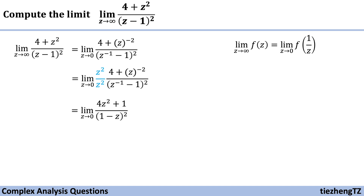The function becomes (4z² + 1) / (1 - z)² when z approaches 0. Now we can substitute z = 0, and the function becomes (4 × 0² + 1) / (1 - 0)², which equals 1/1 = 1.